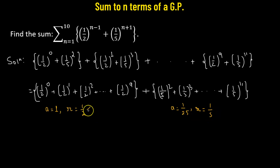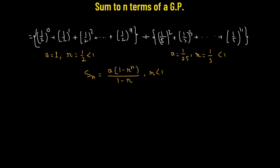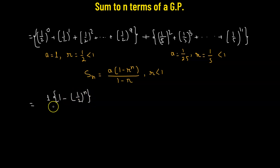Now in both cases, we see that the r value is less than 1. So to find the sum, we will use the formula S equals a times (1 minus r raised to the power of n) whole divided by (1 minus r). This formula works whenever the r value is less than 1. So the sum for the first GP will be: 1, the first term, multiplied by (1 minus one-half raised to the power of n), divided by (1 minus one-half).